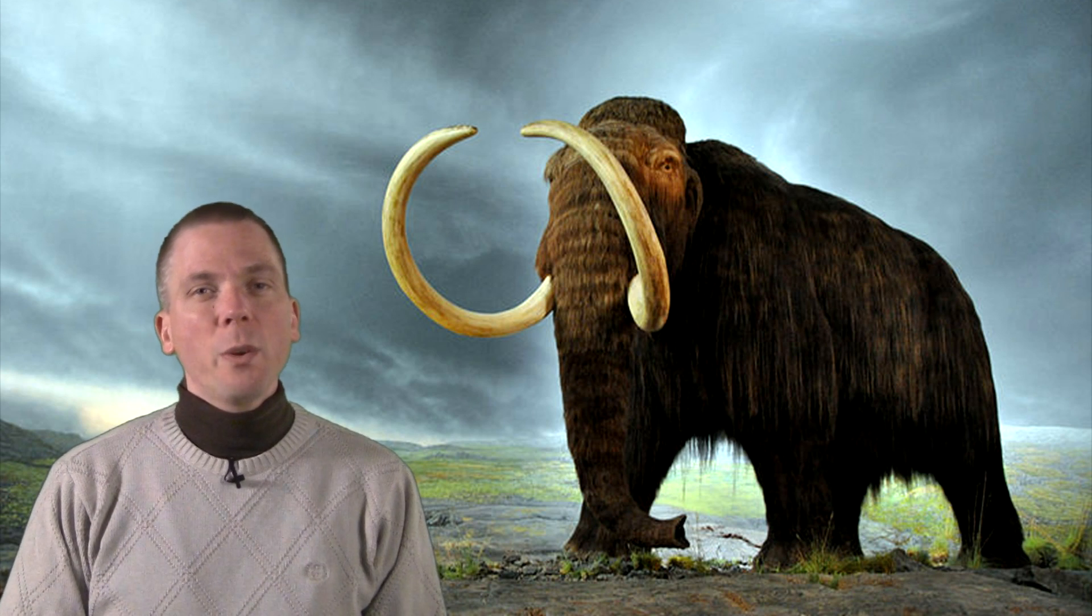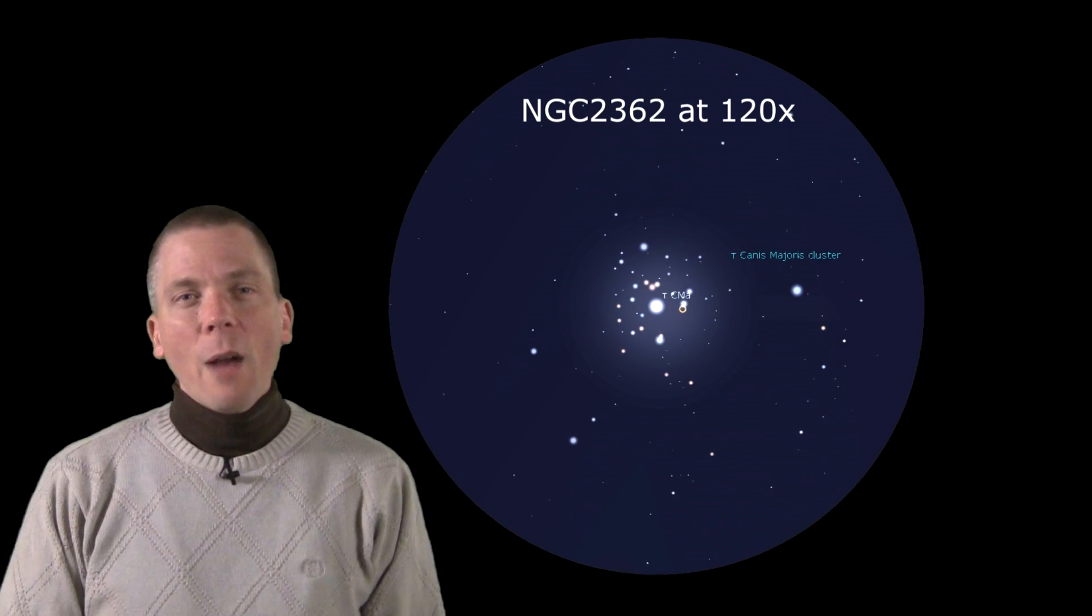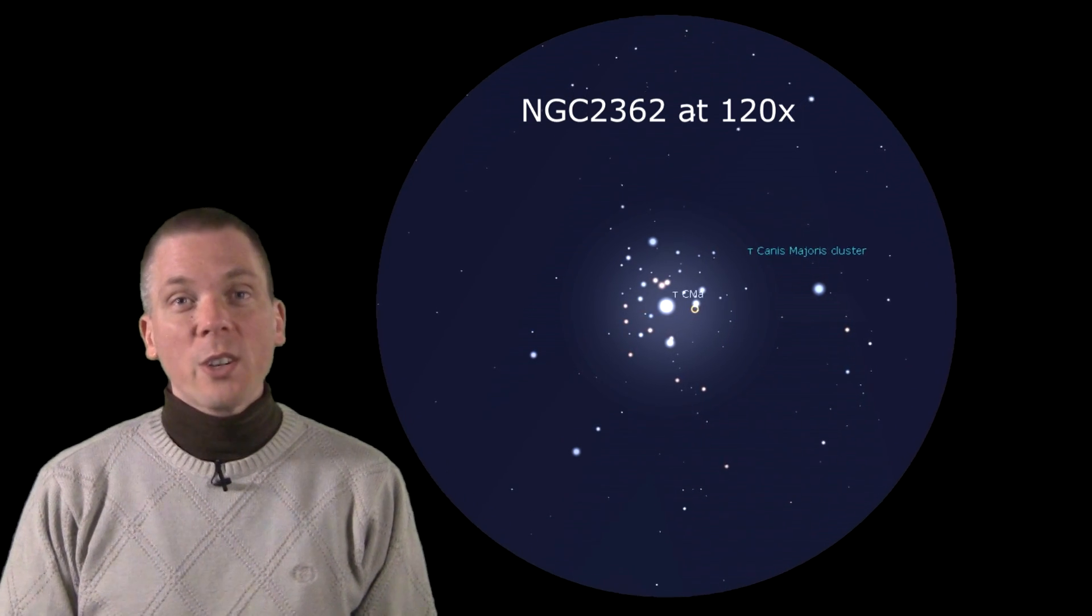This is an odd cluster to observe, though. At just 5 arc minutes across, using higher magnification will help increase the image size at the eyepiece. However, many of the cluster's stars are 7th to 10th magnitude, quite a bit fainter than Tau at 4.4 magnitude. This causes a strange phenomenon to occur while observing.